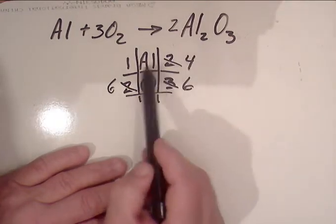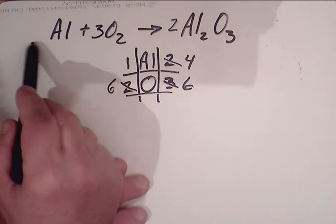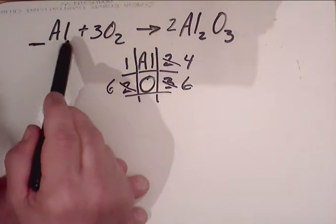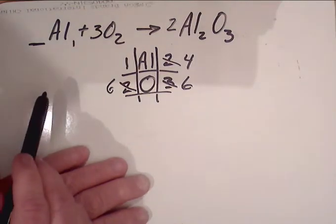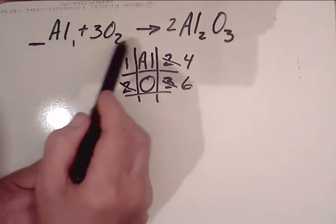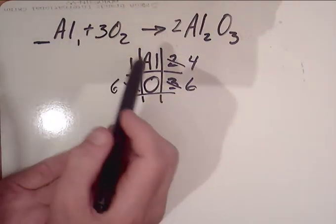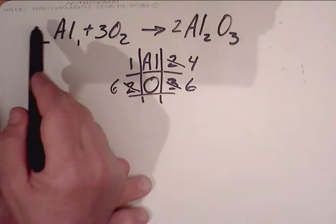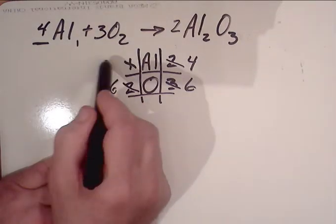I now have four aluminums on the product side. I want four aluminums on the reactant side. What number would I put in front? Remember, you cannot change the subscripts. If there's a blank, you can put ones if that helps you remember there's only one. But you cannot change any subscripts because then you change the formulas and the compounds. We want four aluminums on the reactant side, so we put four in front. Four times one equals four.